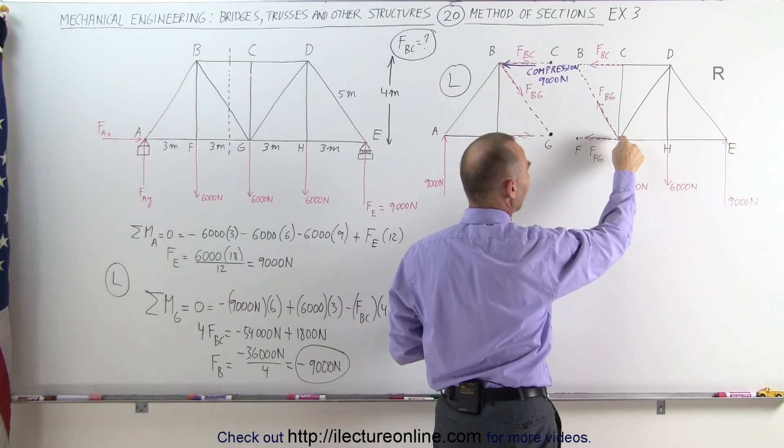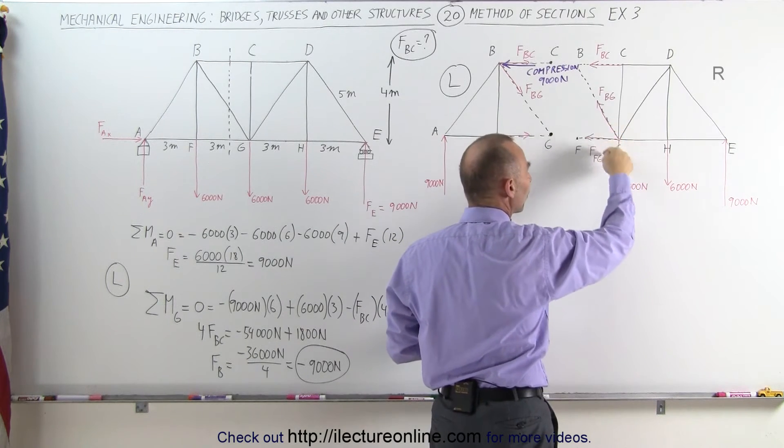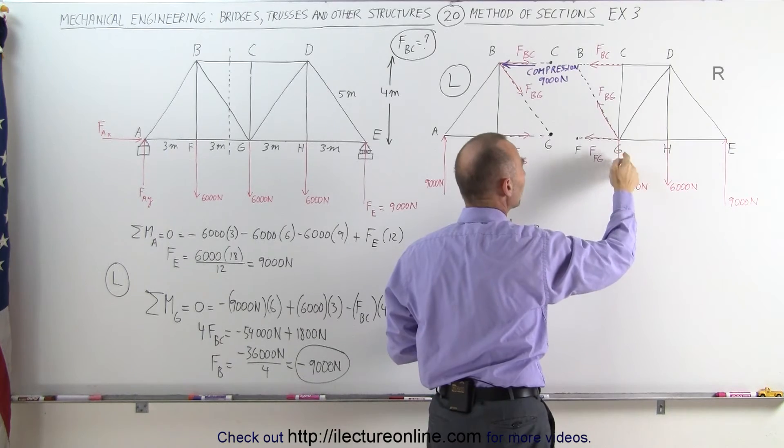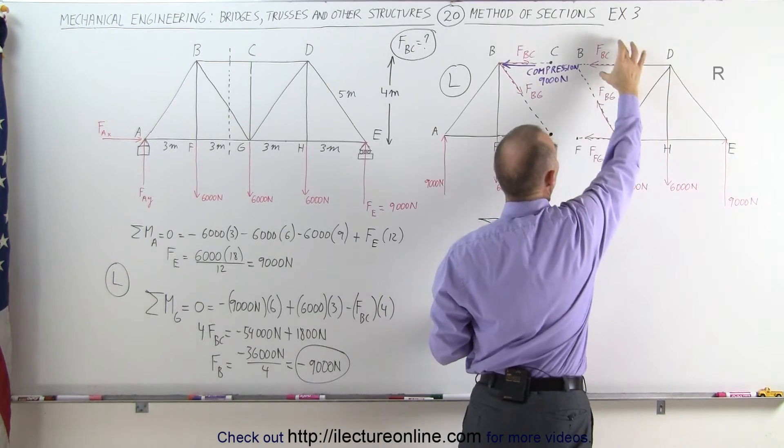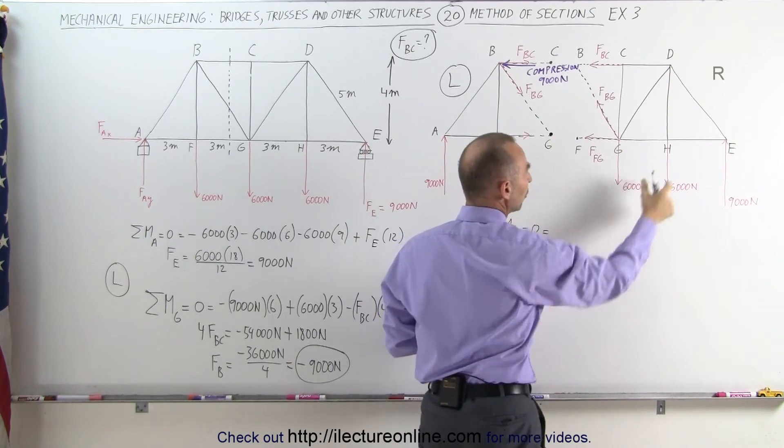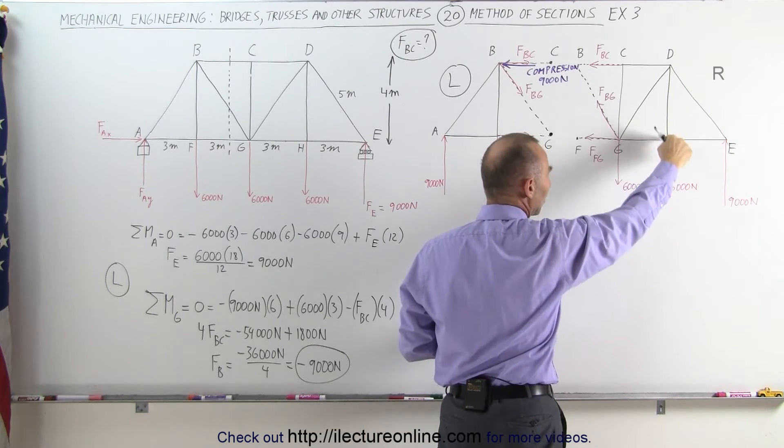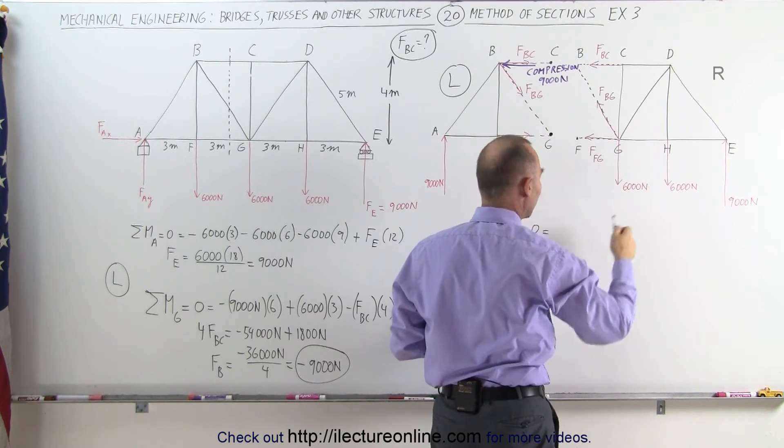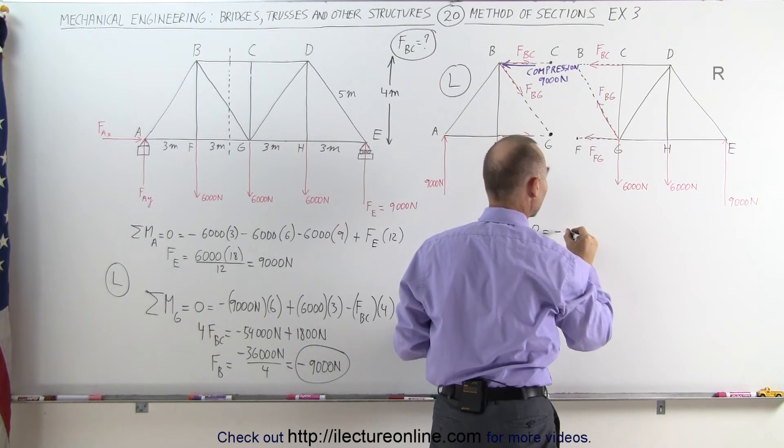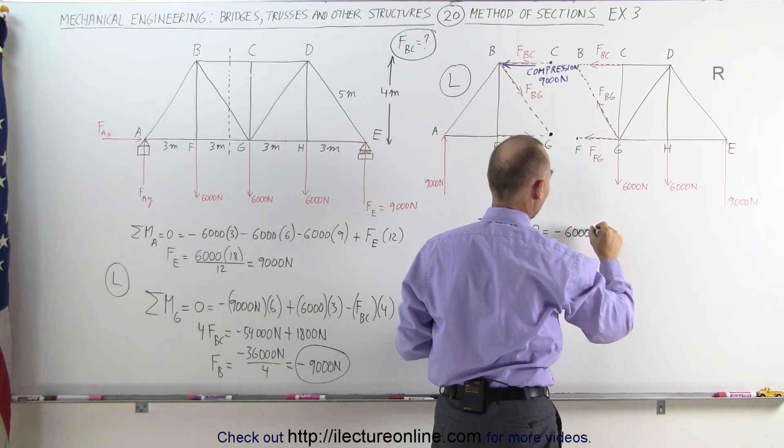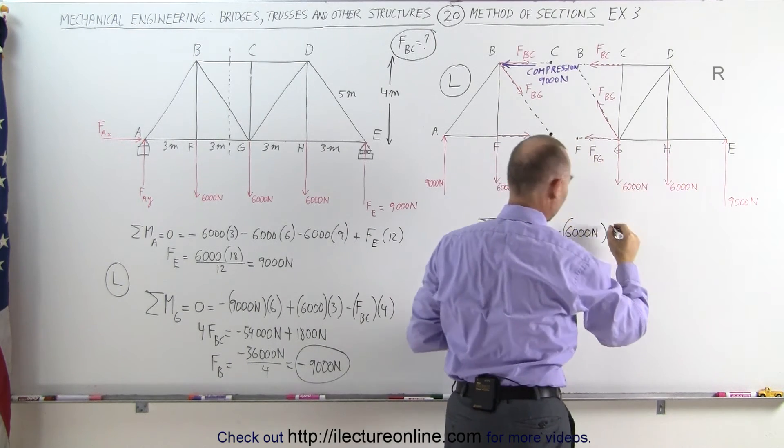First of all, by picking the point there, we eliminate these three forces because they all go right through that point. We only have this force, this force, and this force to contend with. Using the first known force right here, notice that this causes a clockwise motion that would be negative. This is equal to negative 6,000 Newtons multiplied times the distance, which is 3 meters.